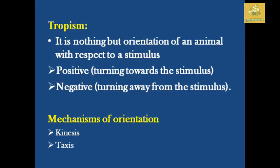If the stimulus is negative — for example, if there is light in a street, that is positive tropism. If you consider UV lights, after a sound is produced, that is negative for insects. This is the mechanism of orientation, the mechanism of tropism, which includes kineses and taxes.